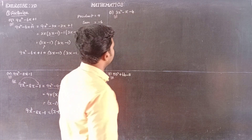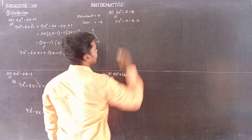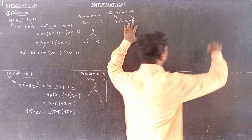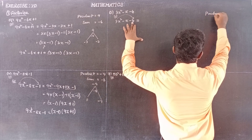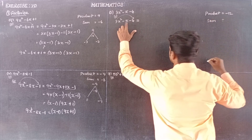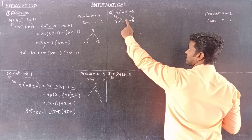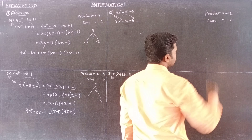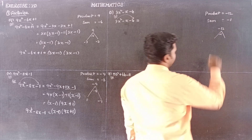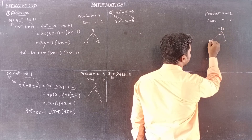Next subdivision: 3x squared minus x minus 4. The coefficient of x squared is 3, and the last term is minus 4. So the product of the two numbers is 3 times minus 4, which is minus 12, and their sum must be minus 1, the coefficient of x.